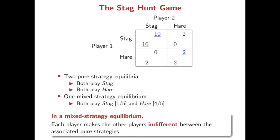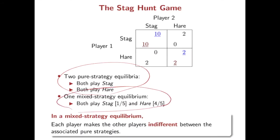So we actually have three Nash equilibria in the Stag Hunt game: two pure strategy equilibria and one mixed strategy equilibrium. Importantly, in a mixed strategy equilibrium, each player makes the other players indifferent between the associated pure strategies. Player 1 makes player 2 indifferent between Stag and Hare, and player 2 also makes player 1 indifferent between Stag and Hare.